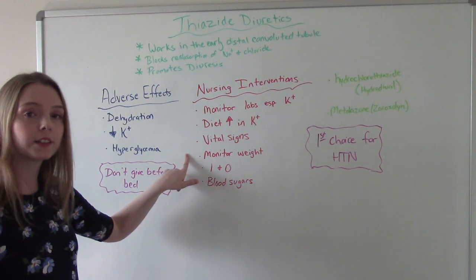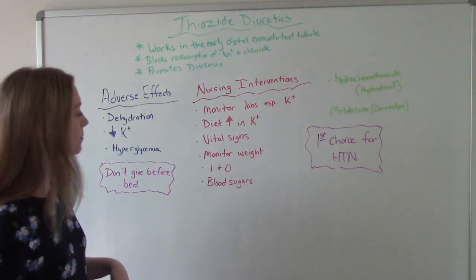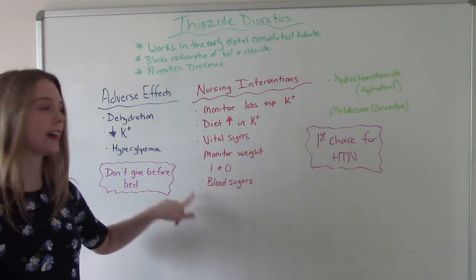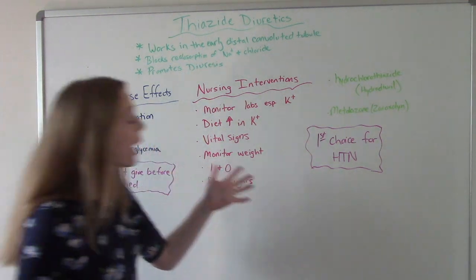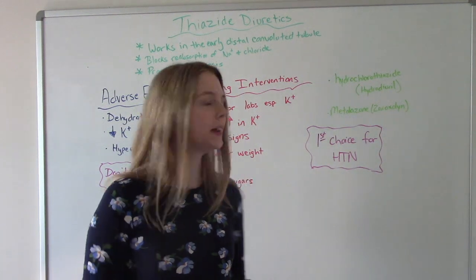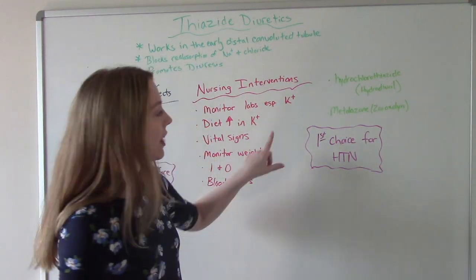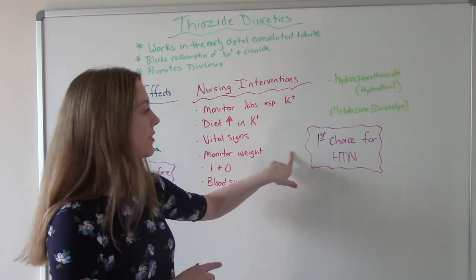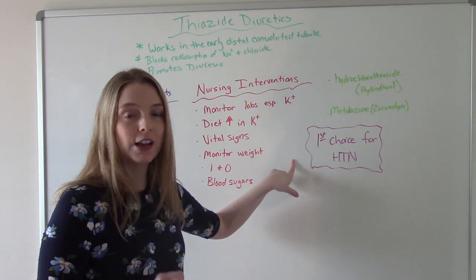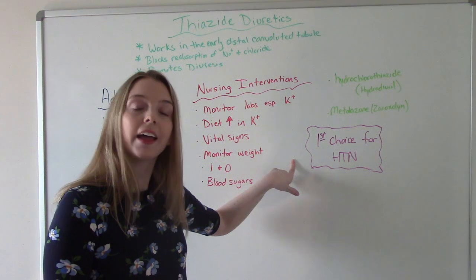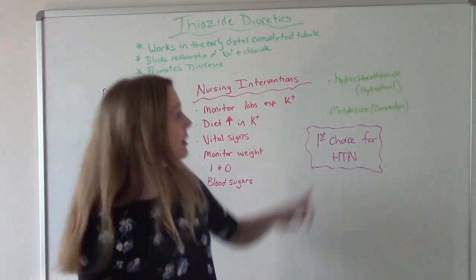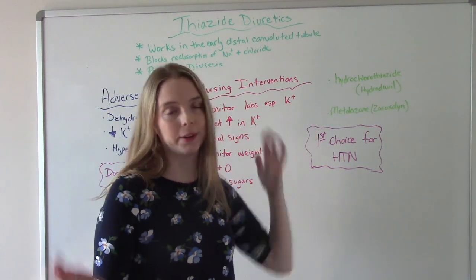Monitor the patient's weight, because they could lose weight on this medication. Monitor I&O and blood sugars, especially in diabetics. A commonly used thiazide diuretic is hydrochlorothiazide. An important point: thiazide diuretics are the first-choice diuretic for treating hypertension. So if your patient has hypertension and needs a diuretic, it will probably be a thiazide diuretic — most likely hydrochlorothiazide.